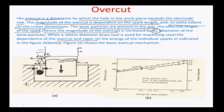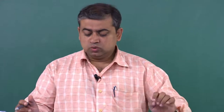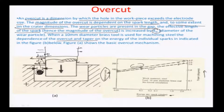When plotting spark energy against taper and over cut, both are found to vary with spark energy. The over cut increases linearly as spark energy increases, and the taper also increases substantially with higher spark energy. All these defects are fundamentally related to the spark energy in joules of the EDM process.